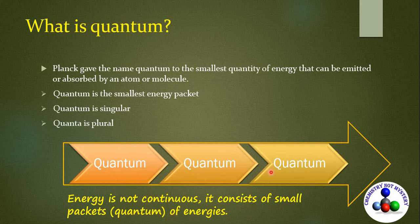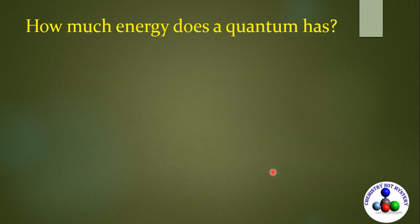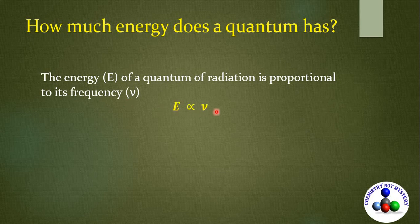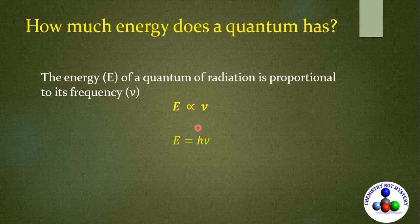So how much energy does a quantum have? The energy E of a quantum of radiation is proportional to its frequency ν. E is directly proportional to ν. When we remove the sign of proportionality, we get a proportionality constant. E equals h ν.